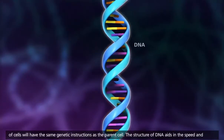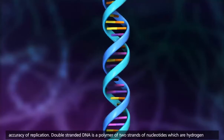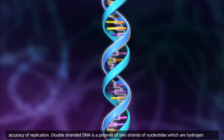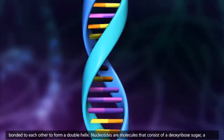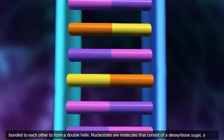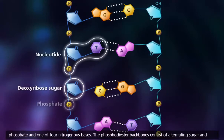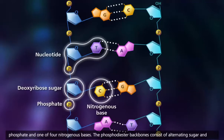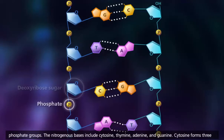The structure of DNA aids in the speed and accuracy of replication. Double-stranded DNA is a polymer of two strands of nucleotides, which are hydrogen bonded to each other to form a double helix. Nucleotides are molecules that consist of a deoxyribose sugar, a phosphate, and one of four nitrogenous bases. The phosphodiester backbones consist of alternating sugar and phosphate groups.